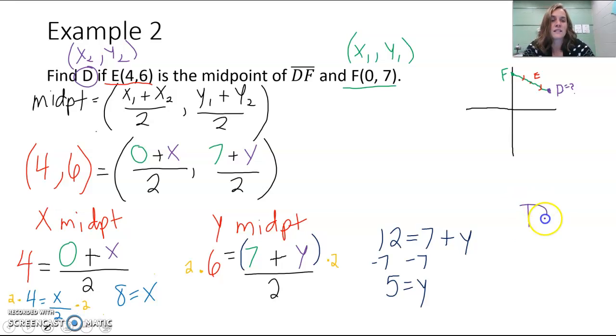So our ordered pair that we were trying to find for D was x equals 8 and y equals 5. If we look at this, we can definitely see that our x should get bigger and our y should get smaller. We went from a y of 7 to a y of 6, so a y of 5 makes sense. It looks like it's a little bit lower, but that just shows you how imperfect my visual is. We see that our y's do get smaller from 7 to 6 to 5, and our x's get bigger from 0 to 4 to 8.